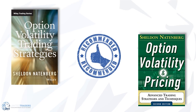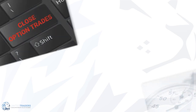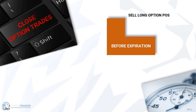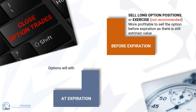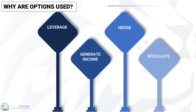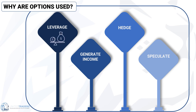A highly recommended book on options pricing is Option Volatility and Pricing by Sheldon Natenberg. Closing option trades before expiration: you can either sell long option positions or exercise the option, though exercising is not recommended. It is more profitable to sell the option before expiration as there is still extrinsic value. At expiration, options will either be assigned if they are in the money, or expire worthless if at the money or out of the money. Options are primarily used due to their leverage — to generate income, hedge, and speculate.